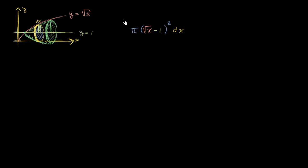This is the thing that we want to sum up over our interval. And our interval — this point right over here where the square root of x is equal to 1, that's just going to be x equals 1. And we said that we would do this all the way until x equals 4. This is the x-axis right over here. So we're going from x equals 1 to x equals 4. And we're essentially taking the area between our square root of x and 1, and we're rotating it around 1. So we're using these little disks right over here. So the interval is between 1 and 4. And so this is going to give us the volume of our solid of revolution.